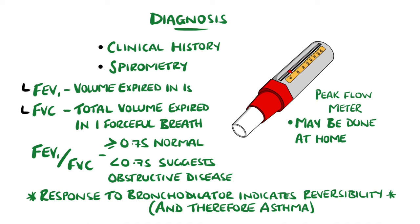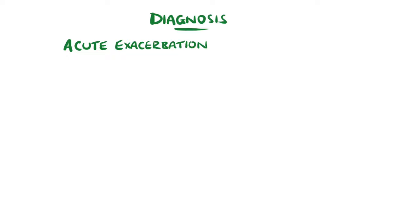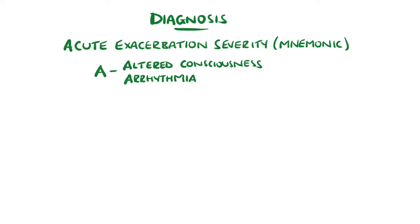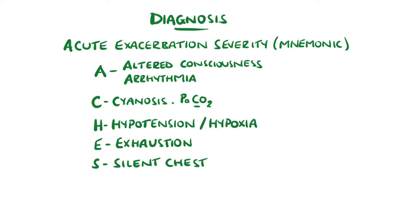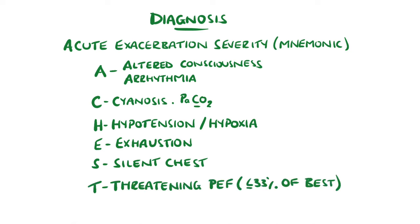Asthmatic patients are encouraged to measure peak expiratory flow when healthy, so the reading during an exacerbation can be compared. To diagnose acute exacerbations, it is mostly down to clinical symptoms, but features suggestive of severity can be remembered with the mnemonic A-CHEST: A for altered conscious level or arrhythmias; C for cyanosis and CO2 — if normal or high, this is worrying as it may indicate fatigue; H for hypotension and hypoxia; E for exhaustion from fighting to breathe; S for a silent chest due to severe bronchoconstriction meaning insufficient airflow to generate wheezing; and T for a threatening peak flow, defined as below 33% of their best.